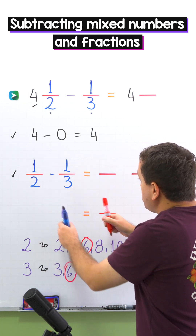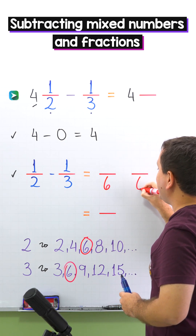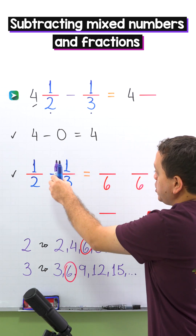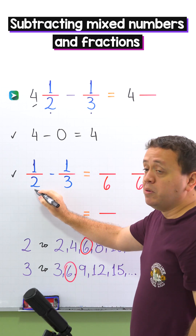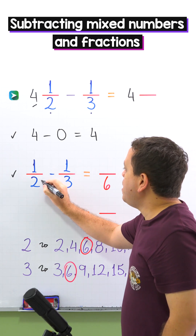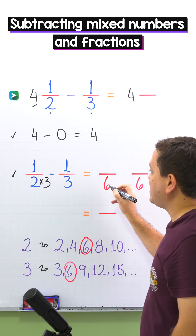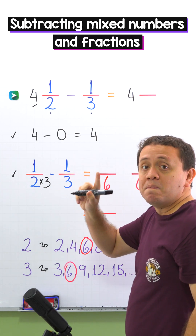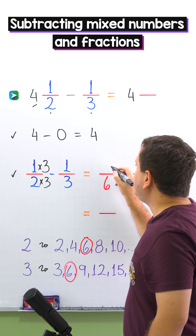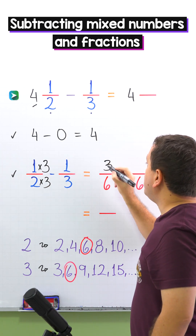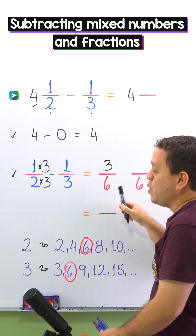For each fraction we need an equivalent fraction with a denominator of six. Let's start with one half. By what number should we multiply two to get six? By three, because two times three equals six. Whatever we do to the bottom we must do to the top, and one times three gives us three. So one half and three sixths are equivalent fractions.